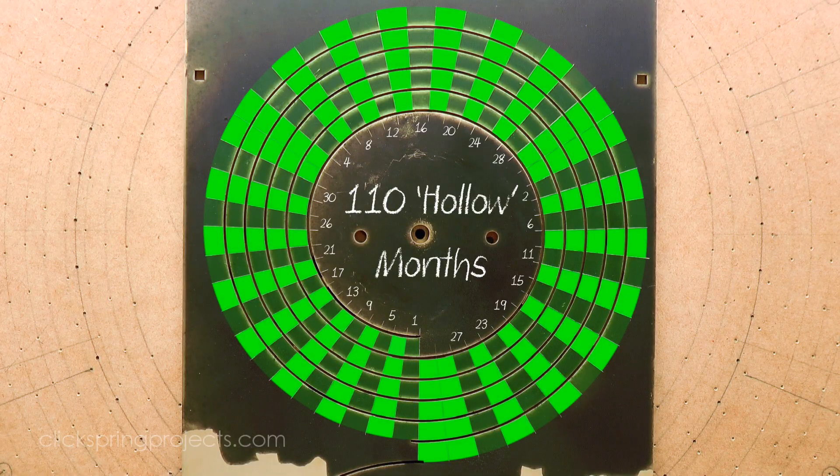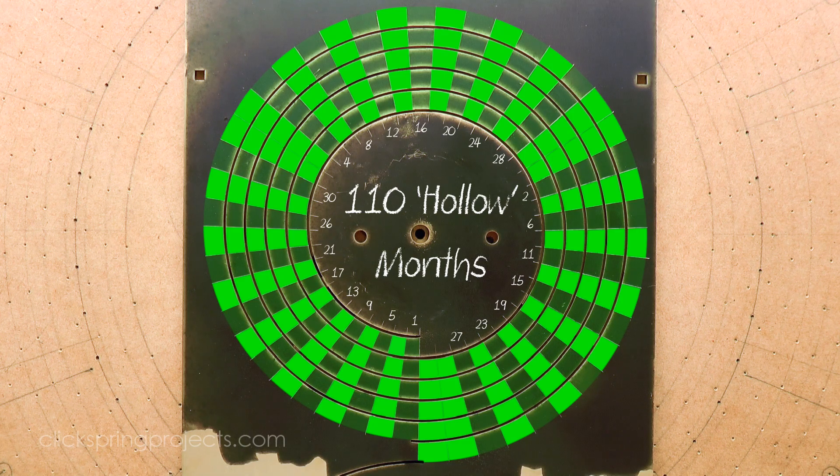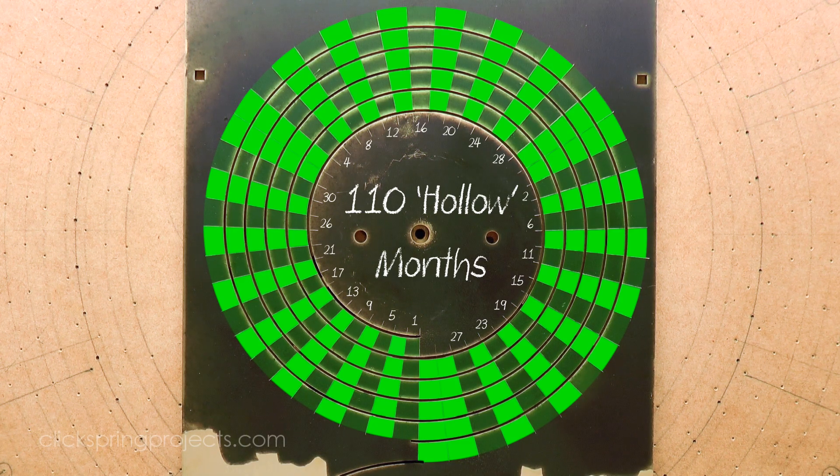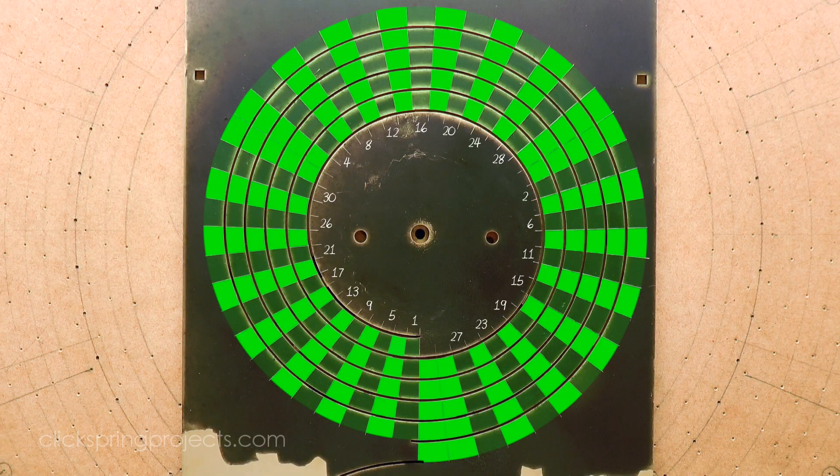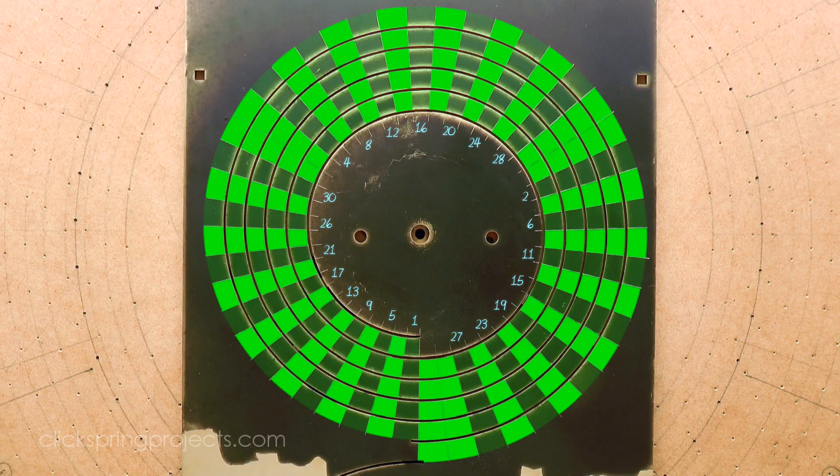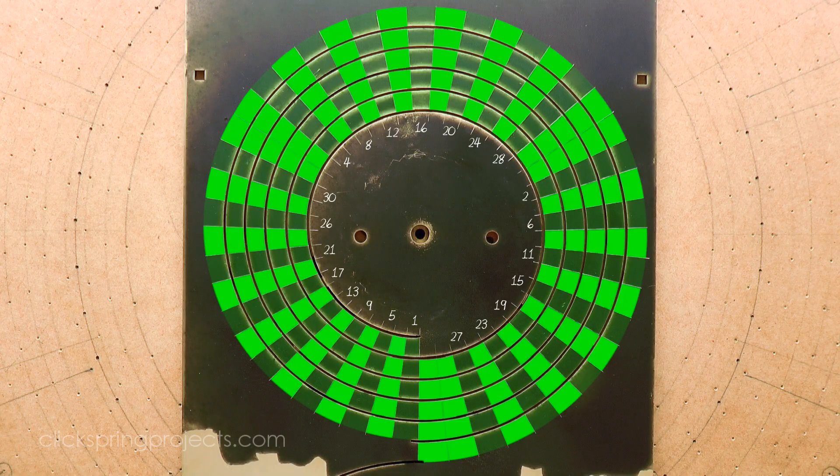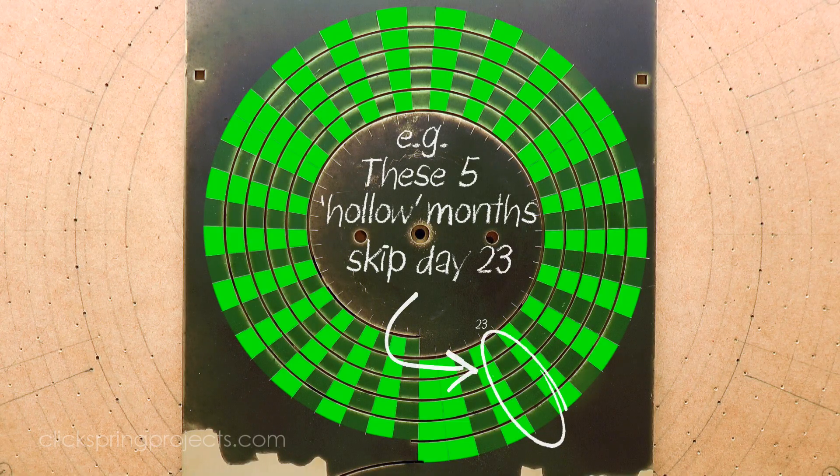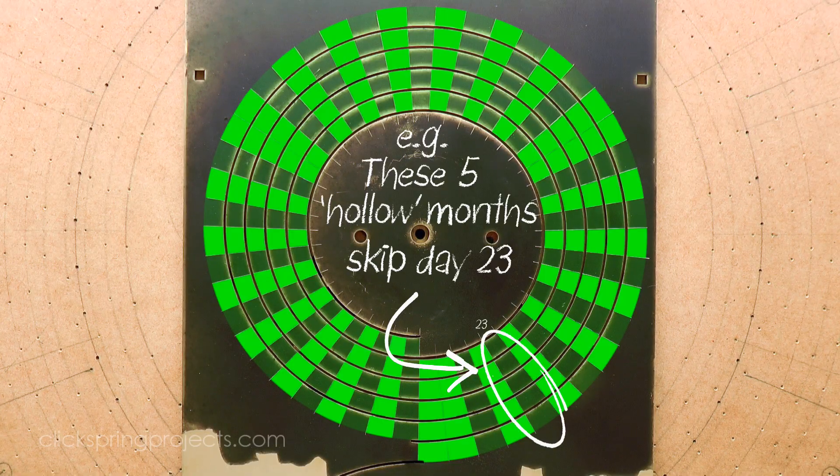110 being neatly divisible by 5 means that on a 5 spiral dial, these hollow months can be conveniently displayed as 22 regularly spaced groups of 5 sharing the same radial sector. And the evidence suggests that the index numbers associated with each radial sector specified which day of each of those months was to be skipped. So for example, each month on this sector is hollow, so of 29 days duration, and skipped day 23.